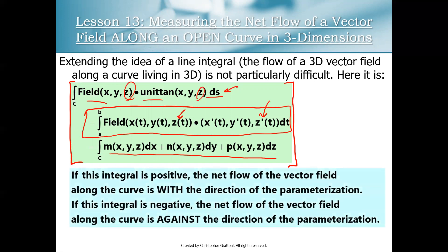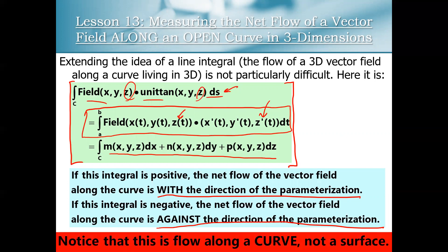The interpretation is the same as in previous chapters. If the integral computes to a positive value, then the net flow of your vector field along your open curve is with the direction of parameterization, with the direction of your tangent vectors. If that integral computes to a negative value, then the net flow is against the direction of parameterization. We are talking about curves here — it's not super complicated yet. For this first video, we're just computing the net flow along an open curve in three-dimensional space, no surfaces quite yet.